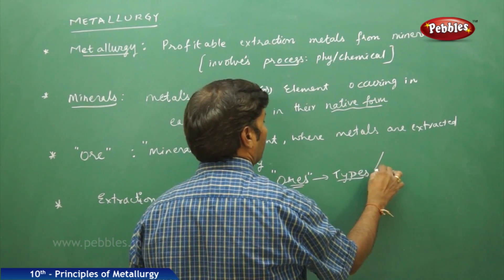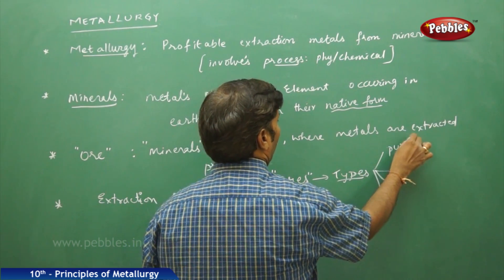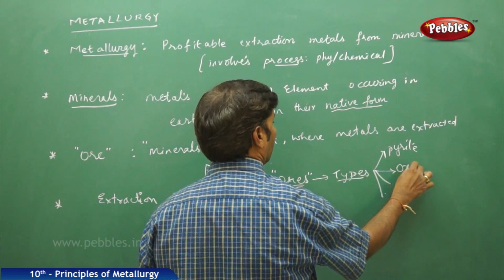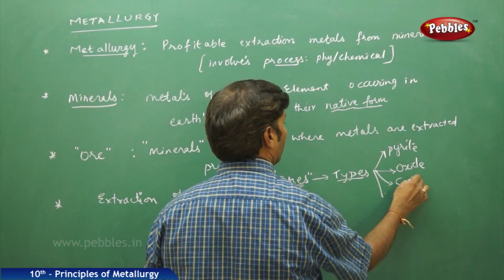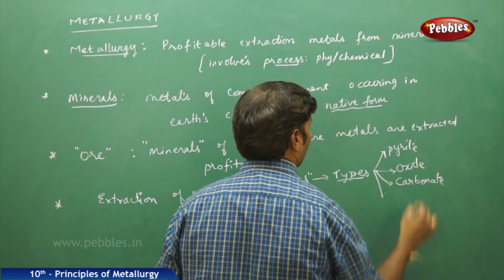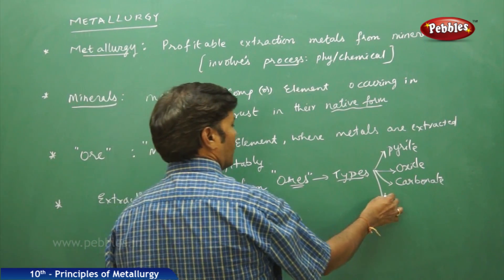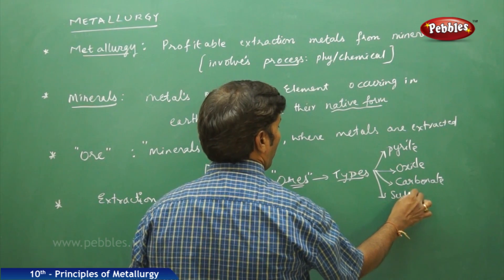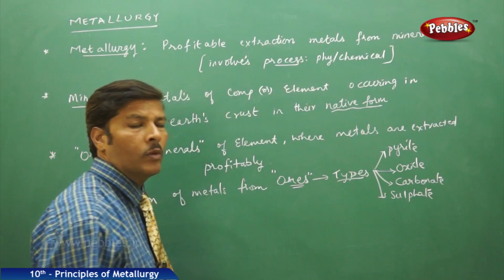When we say types, there are different types of ores: pyrite ores, pyrite mineral ores, oxide mineral ores, carbonate mineral ores, sulfate mineral ores, and so on.